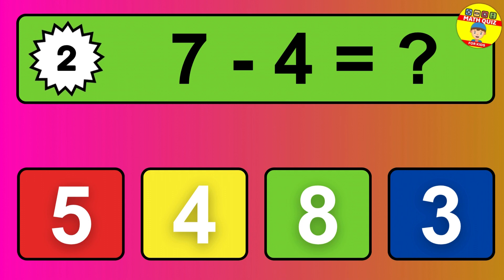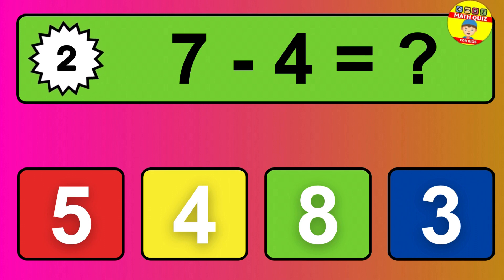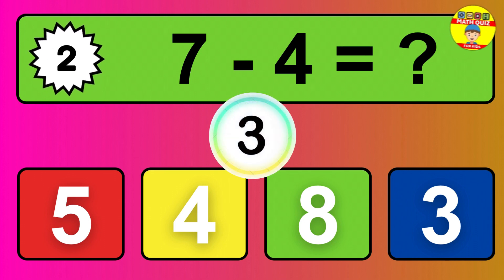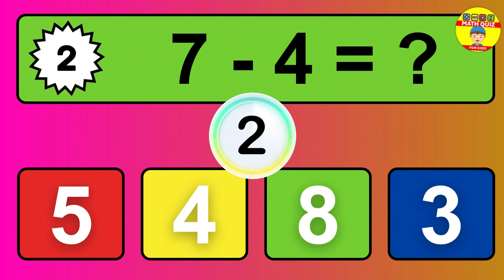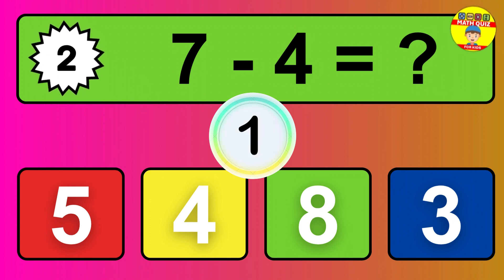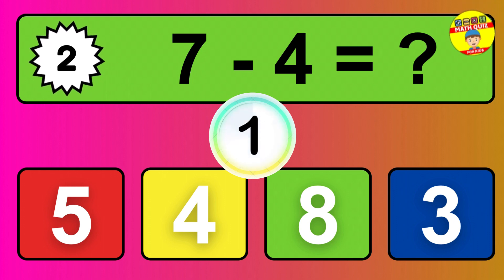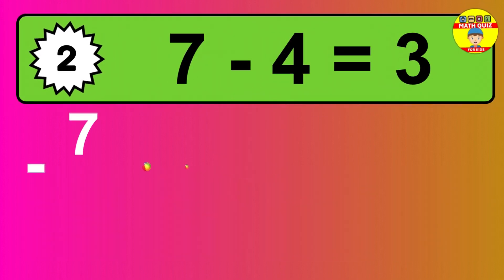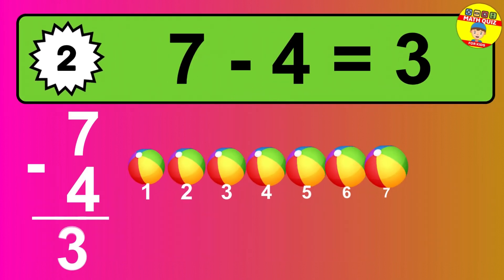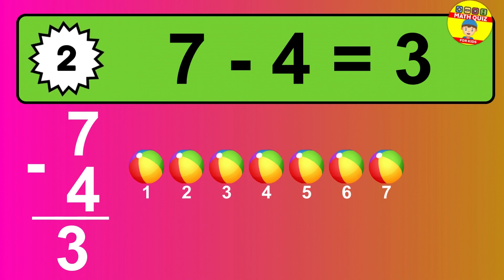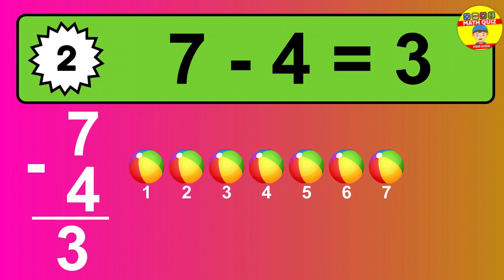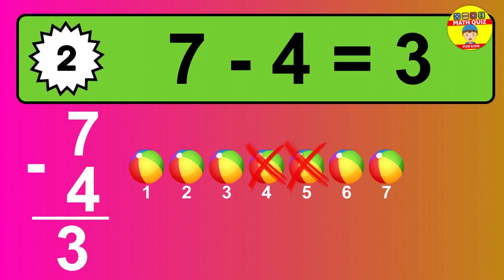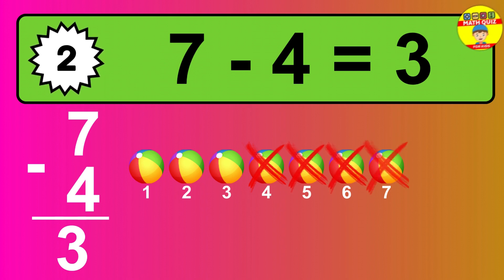Question 2: 7 minus 4 equals what? The answer is 7 minus 4 is 3. Let's count it: 1, 2, 3.